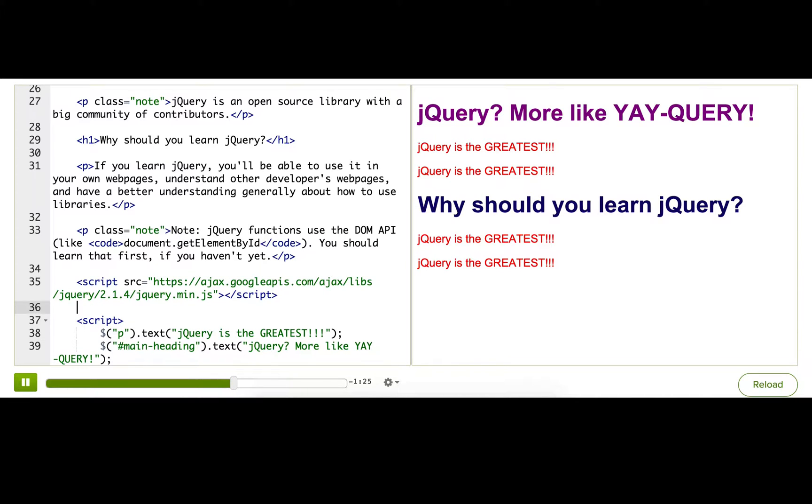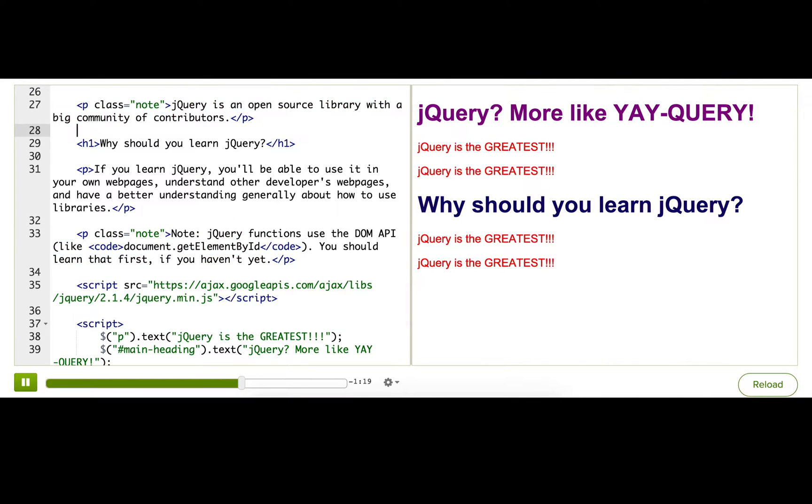Okay, let's do one more example. So let's say I want to change all of my note paragraphs and make them have a yellow background color. So let's do that in CSS. Now the thing that distinguishes them is they have a class name of note.